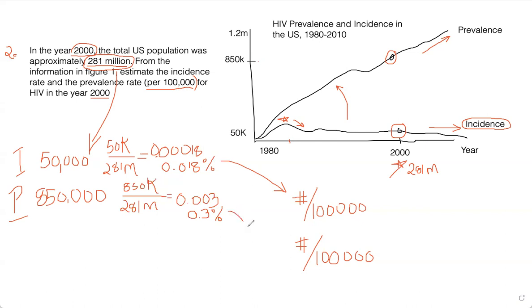Now, let's see how that translates to the number of individuals infected per 100,000. So if you were to take 0.018% of 100,000, that would equal to 18 over 100,000 individuals. So in other words, the incident of new cases annually in the year 2000 was 18 individuals per 100,000. Now, the prevalence is going to be a little bit different. The prevalence is going to be 0.3% times 100,000.